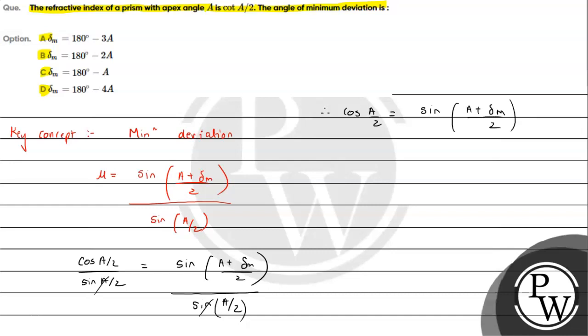Now we can use the identity cos(θ) = sin(π/2 - θ). So cos(A/2) = sin(π/2 - A/2). Therefore, π/2 - A/2 = (A + δₘ)/2.